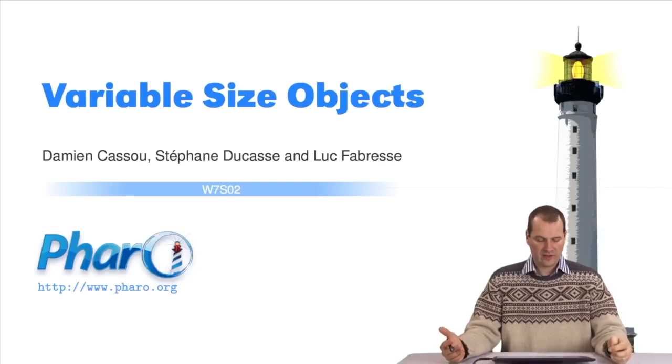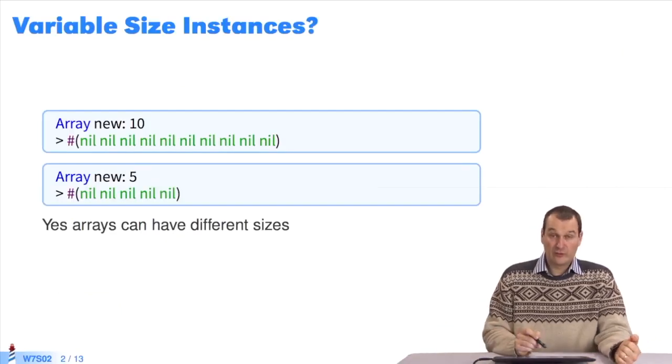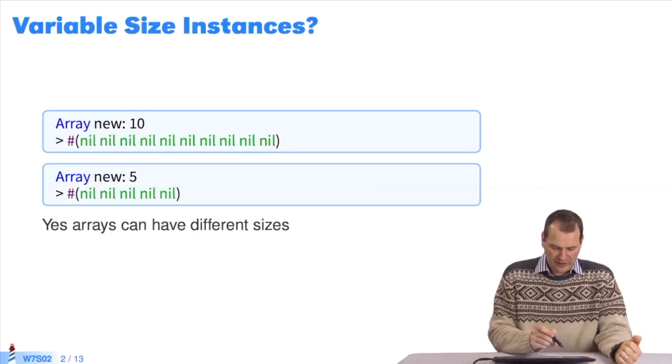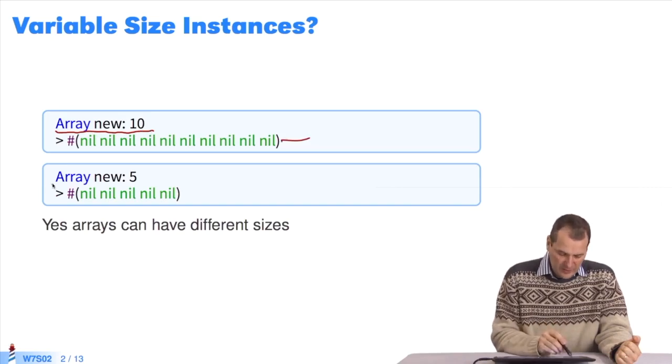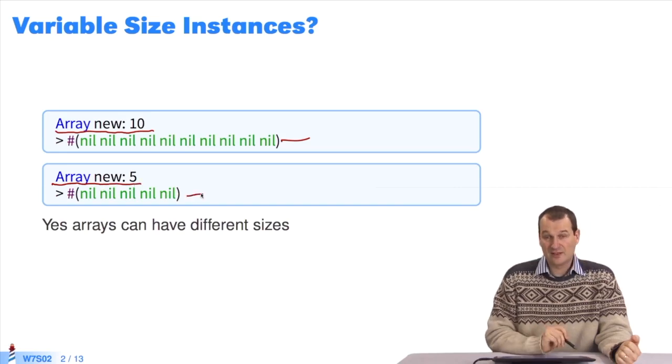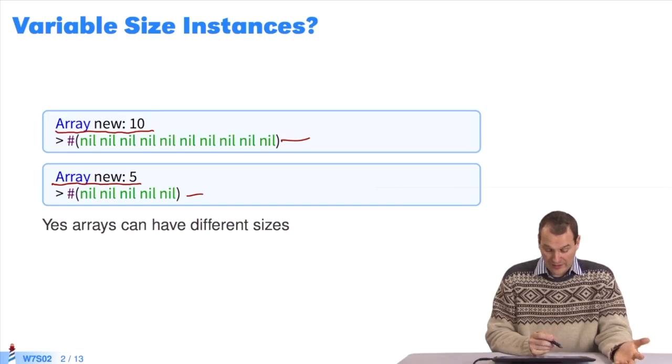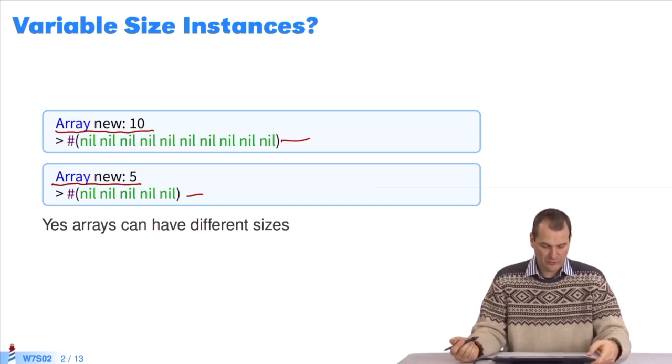How to define variable size objects. You'll notice that we already use objects of different sizes. Here, I'll create an array using this expression. It contains 10 elements, all set at nil. Using the same expression, I now create an array that contains 5 elements. We see that the array class creates instances of variable sizes, but until now we haven't explained how you can do this.